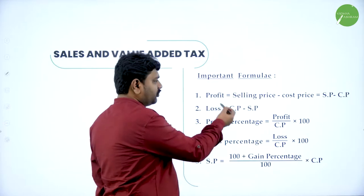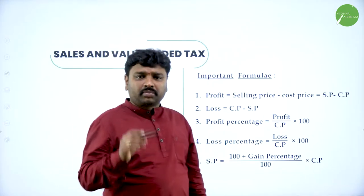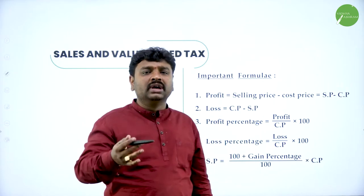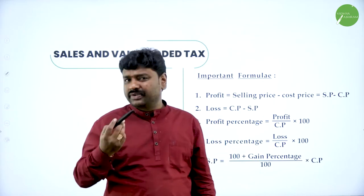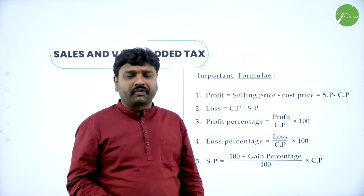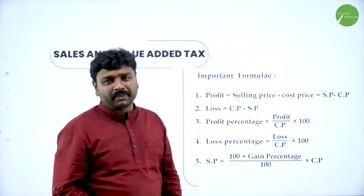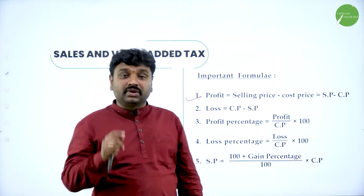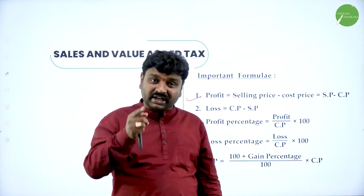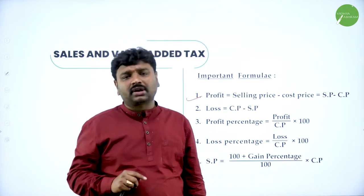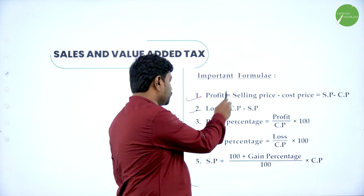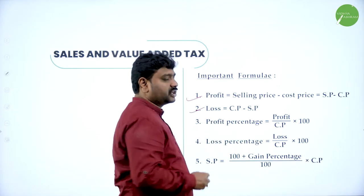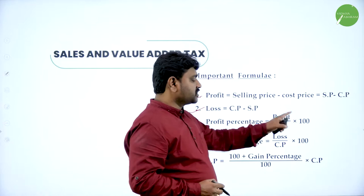Now, what is profit? Profit you'll get when selling price is more than cost price. When you sell a good for more than the cost price, we get profit. Profit is SP minus CP — selling price minus cost price. Loss is when you sell a good for a lesser price than cost price. Loss is cost price minus selling price. Profit percentage is profit divided by cost price into 100.